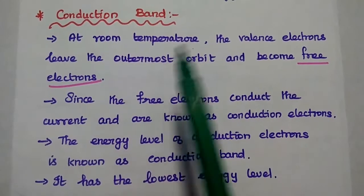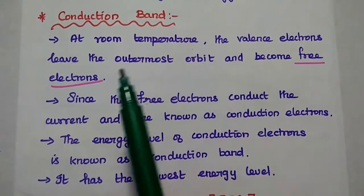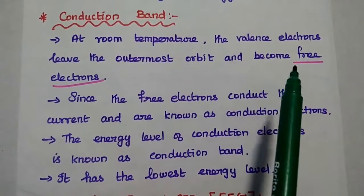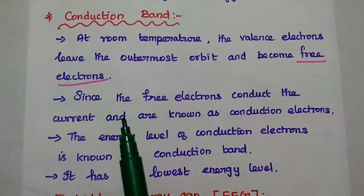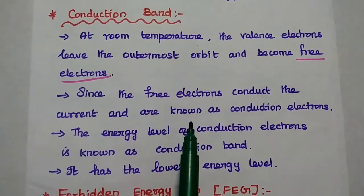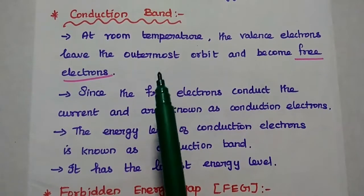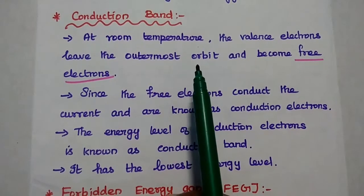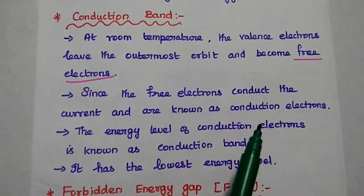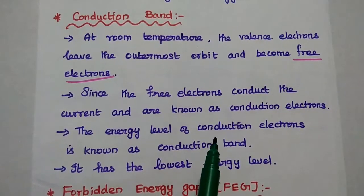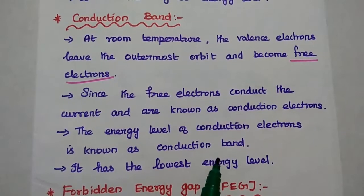The energy level of these valence electrons is known as the valence band. It has the highest energy level. Next is the conduction band. At room temperature, the valence electrons leave the outermost orbit, which is the valence orbit, and become free electrons. Since the free electrons conduct electric current, these are known as conduction electrons. The energy level of these conduction electrons is known as the conduction band. It has the lowest energy level.